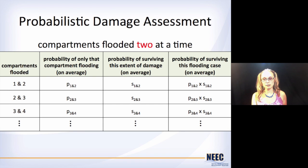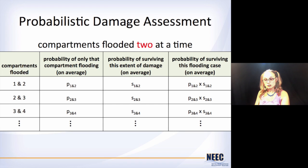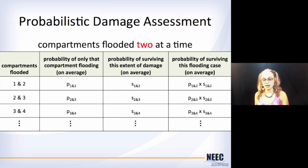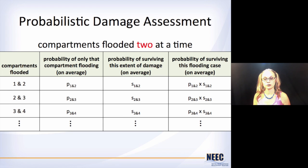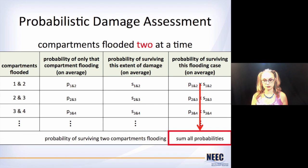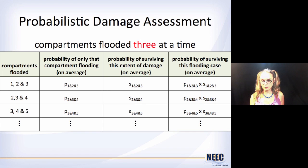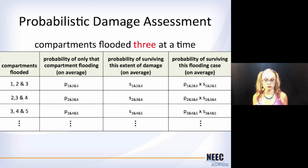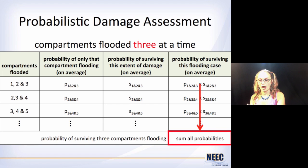Do the same thing but now look at two compartments. So now we've got compartment one and two: what's the probability that both of those compartments flood at the same time? And then what are the chances that you're going to survive compartments one and two being flooded? Multiply the two together and that's the probability of surviving that particular flooding case. Do one-and-two, two-and-three, three-and-four — all combinations. Add all those together and that's the probability of surviving any two compartments flooding at any given time. You can do the same thing for three compartments, four compartments, however detailed you want to get — you just keep multiplying these all together and then adding them up.